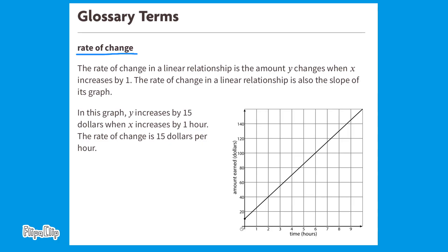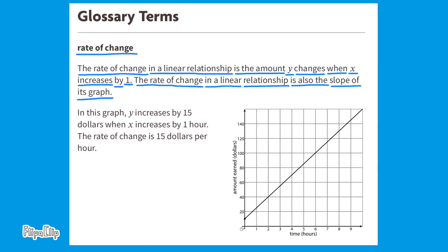Rate of Change: The rate of change in a linear relationship is the amount y changes when x increases by 1. The rate of change in a linear relationship is also the slope of its graph. In this graph, y increases by $15 when x increases by 1 hour. The rate of change is $15 per hour.